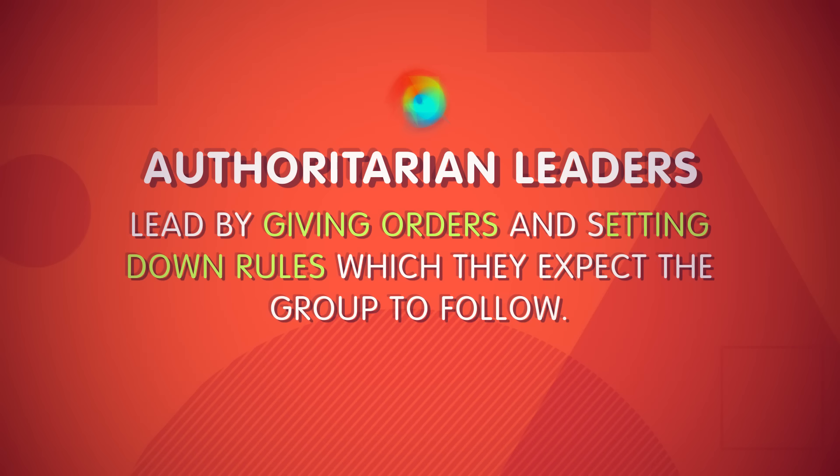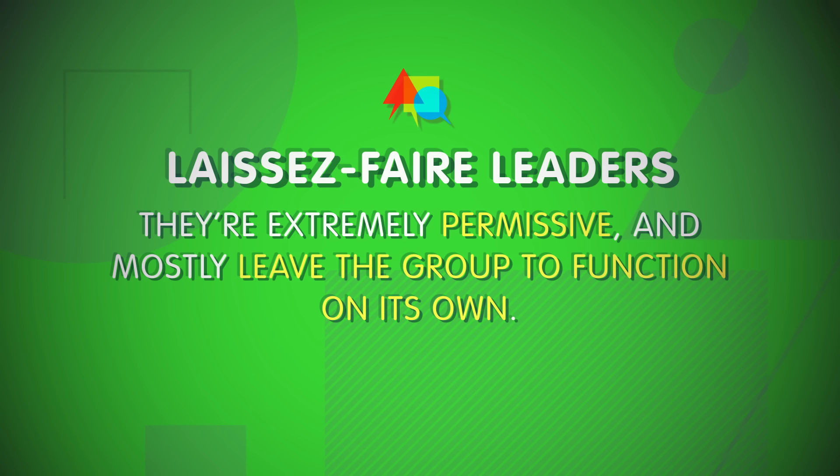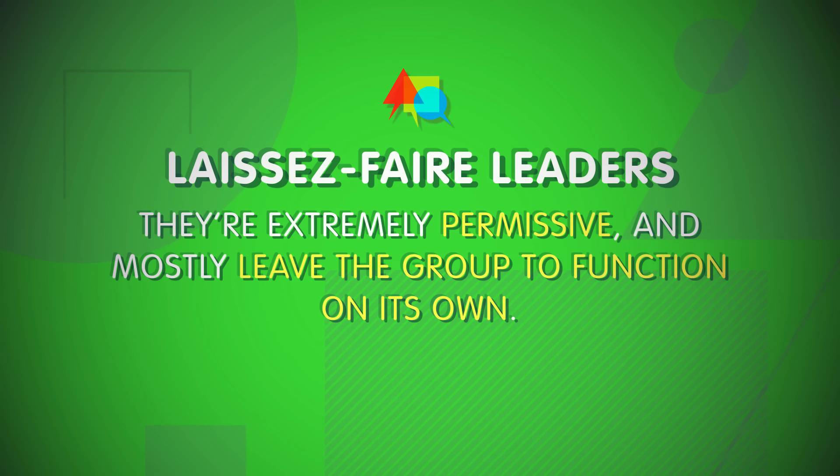Authoritarian leaders lead by giving orders and setting down rules, which they expect the group to follow. Such a leader earns respect and can be effective in a crisis, but at the expense of affection from group members. Democratic leaders, on the other hand, lead by trying to reach a consensus — instead of issuing orders, they consider all viewpoints to try to reach a decision. Such leaders are often less effective during a crisis, but they often find more creative solutions and are more likely to receive affection from group members. Finally, laissez-faire leaders do the least leading — they're extremely permissive and mostly leave the group to function on its own. This means lots of freedom, but it's the least effective style at promoting group solidarity and in times of crisis.